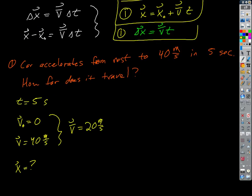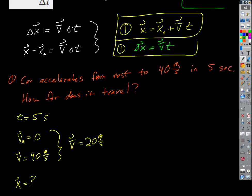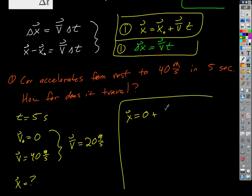Now we've got everything we need. We take our equation: x equals zero plus v-bar, which is 20 meters per second, times t, which is five seconds. 20 times five is 100. The units work out — meters per second times seconds, the seconds cancel — and we end up with 100 meters.